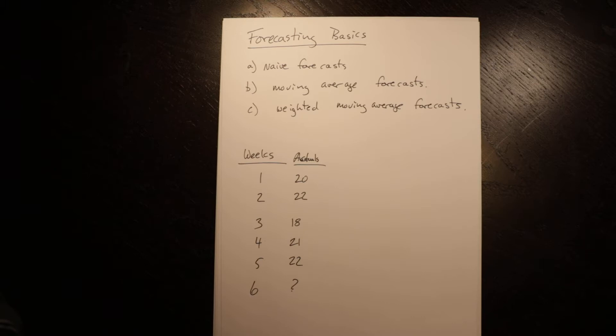Seasonality is regular changes in expectations based on seasons, weeks, time of day, time of year, all of those sorts of things. And the last one will be looking at forecast error, which is a way that we evaluate different forecasting approaches and take a look at which one is performing best in our individual circumstance.